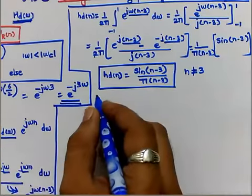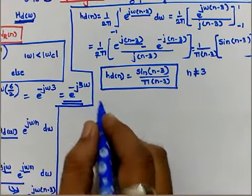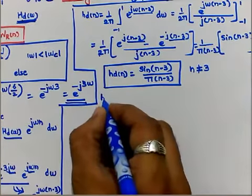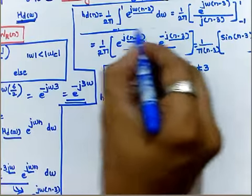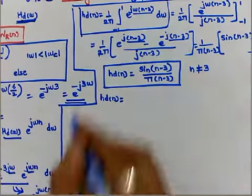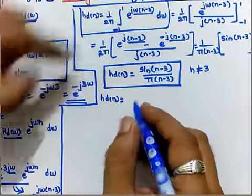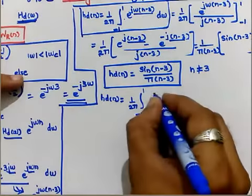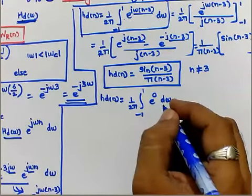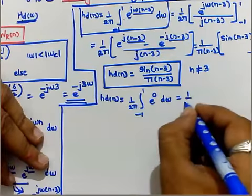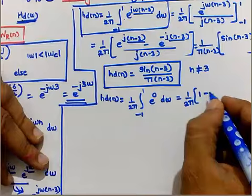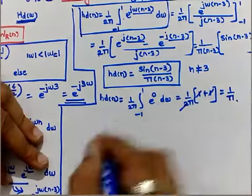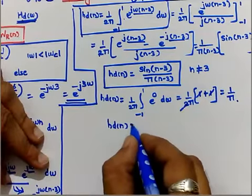To find hd[3], we return to the integral with n = 3 substituted: e^(jω(3-3)) = e^0 = 1. So hd[3] = (1/2π) · ∫ from -1 to +1 of 1 dω = (1/2π)·(1−(−1)) = 2/(2π) = 1/π. Therefore hd[3] = 1/π when n = 3.